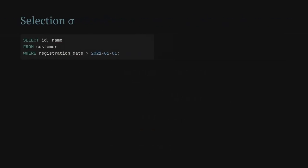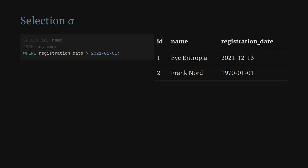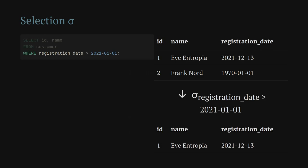The second operator is the selection, denoted by the lowercase sigma. Here's where something unfortunate has happened: the selection does not correspond to the SELECT part — we've already covered that with projection. It corresponds to the WHERE part. I blame the SQL people for this; the relational algebra people came up with 'selection' first. What it does is filter rows based on a condition, written in the subscript. So here we filter down to only rows where the registration date is greater than the 1st of August 2021, ending up with one of the two customers.